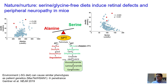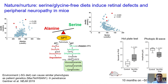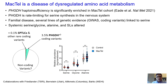We wanted to ask whether we could drive this neurological phenotype by manipulating the diet. We fed mice a serine-glycine-free diet in a chow background and observed that after 10 months, they lost thermal sensing as measured by a hot plate assay and exhibited some retinal defects. Although mice don't have a macula, this really highlights that the same phenotype driven by genetics can also be driven by an atypical diet.